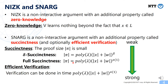Usually we think of efficient verification as the default requirement for SNARK. However, in this work, we construct NIZK from SNARK used as a building block primitive, so we also consider these weaker properties to make our assumptions weaker.